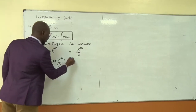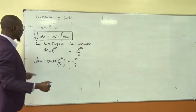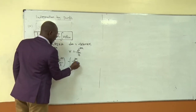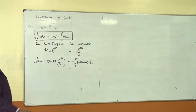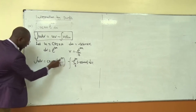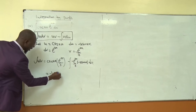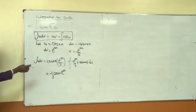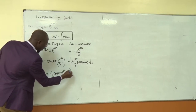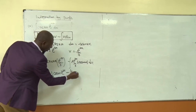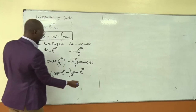Minus the integral of v·du, that is [e^(−3x)/(−3)] multiplied by (−2·sin(2x)) dx. Simplifying, we get: this equals −(1/3)·cos(2x)·e^(−3x). The two negative signs cancel, leaving minus the integral of (2/3)·sin(2x)·e^(−3x) dx.